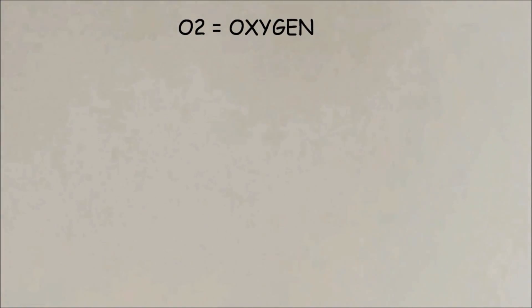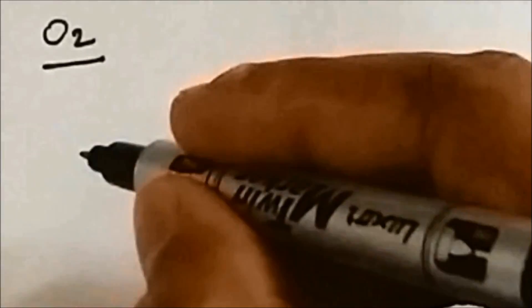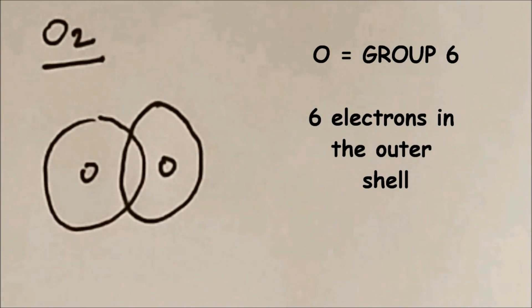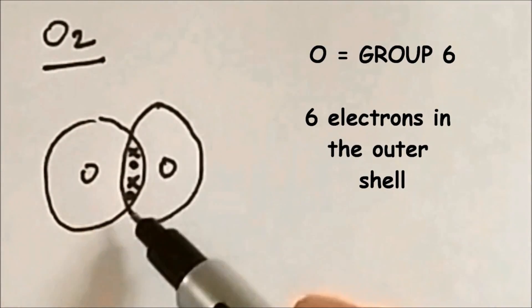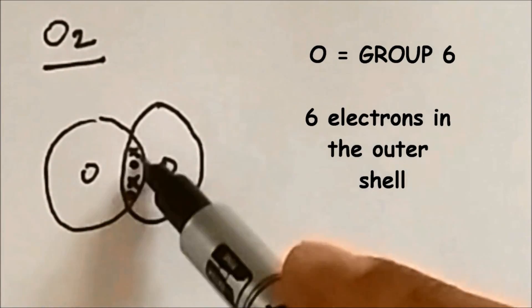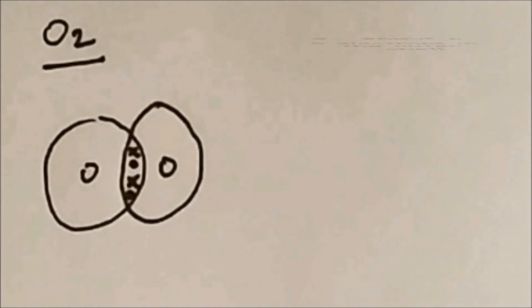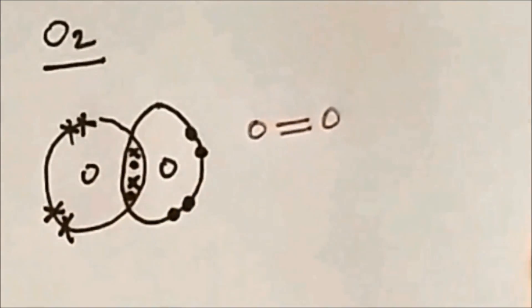The next molecule is oxygen, O₂. Oxygen has a double bond, meaning there are two pairs of electrons in the overlap — four electrons total. Oxygen is in group 6, so it has six electrons in the outer shell. Four electrons are in the overlap — two belonging to each oxygen atom — and the leftover four are placed outside the overlap on each side. For a double bond, we draw two lines.